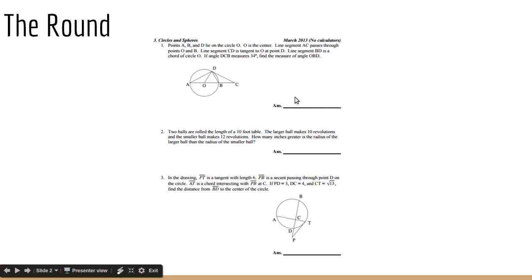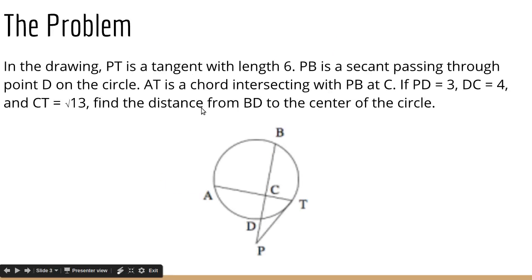Okay, so today we are doing problem 3. They give us this drawing, and in the drawing, PT is a tangent with length 6. PB is a secant passing through point D on the circle. AT is a chord intersecting with PB at C. If PD is 3, DC is 4, CT is square root 13, find the distance from BD to the center of the circle.